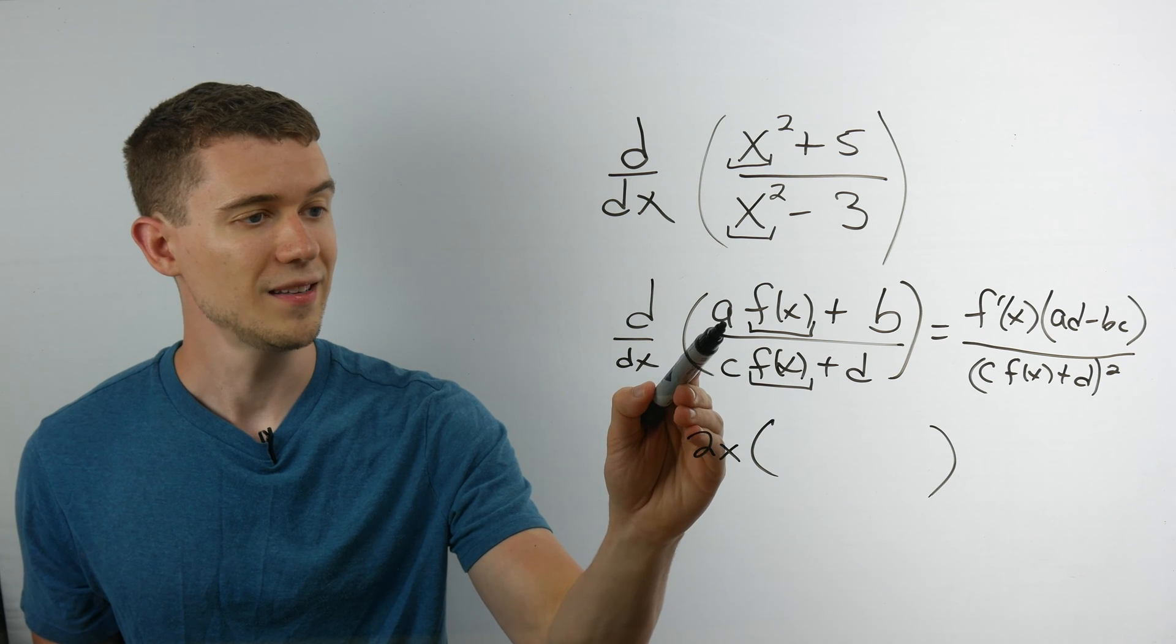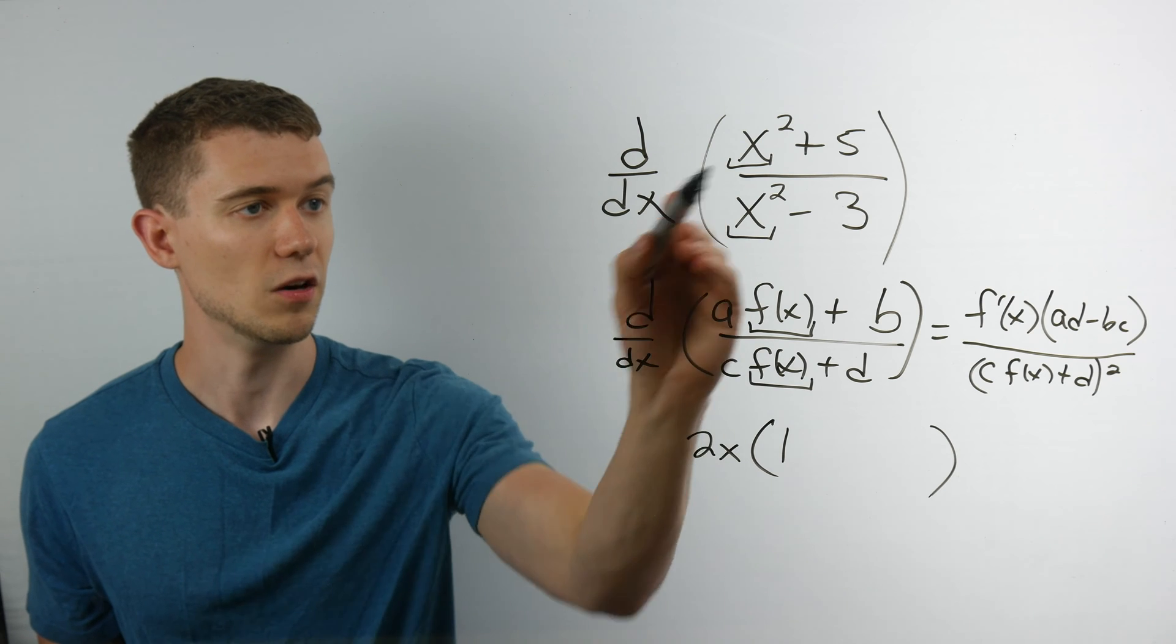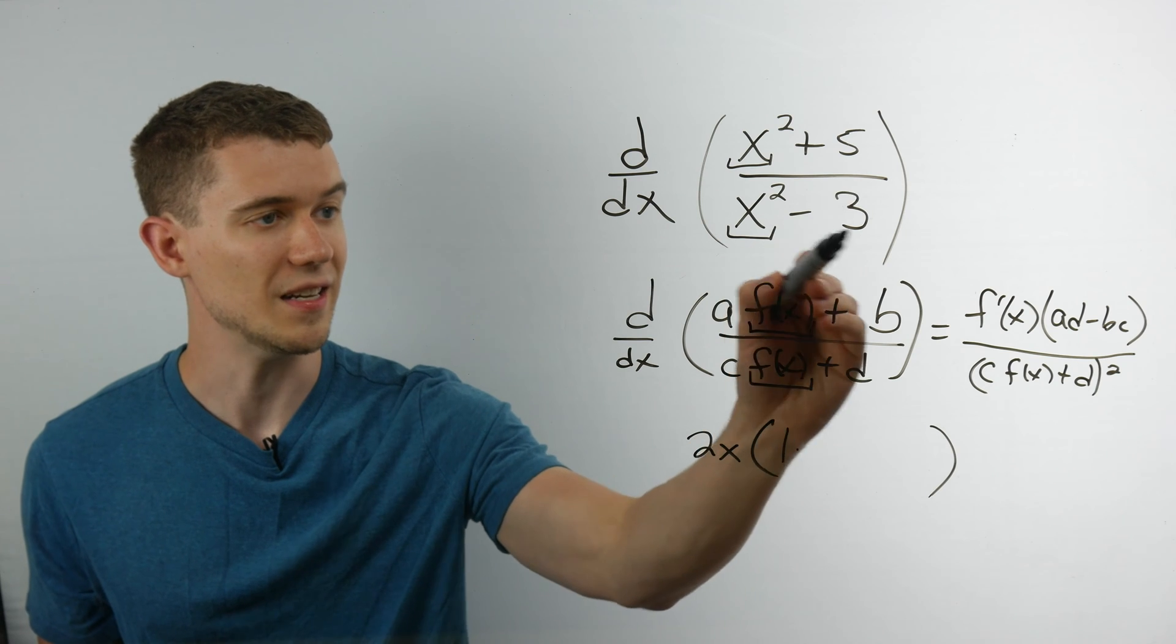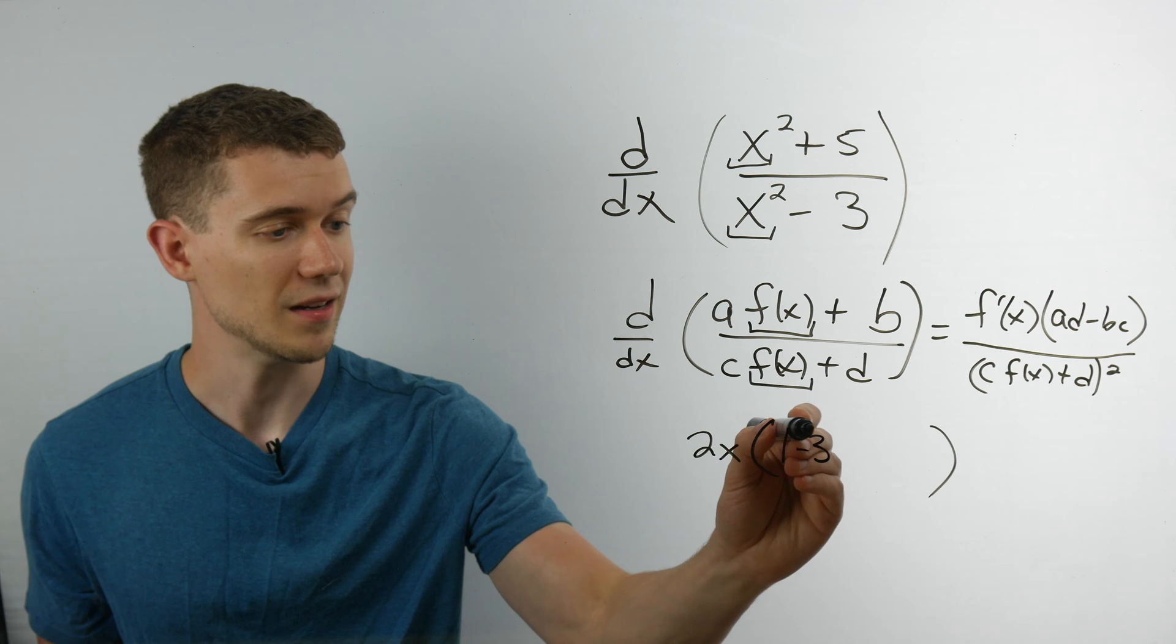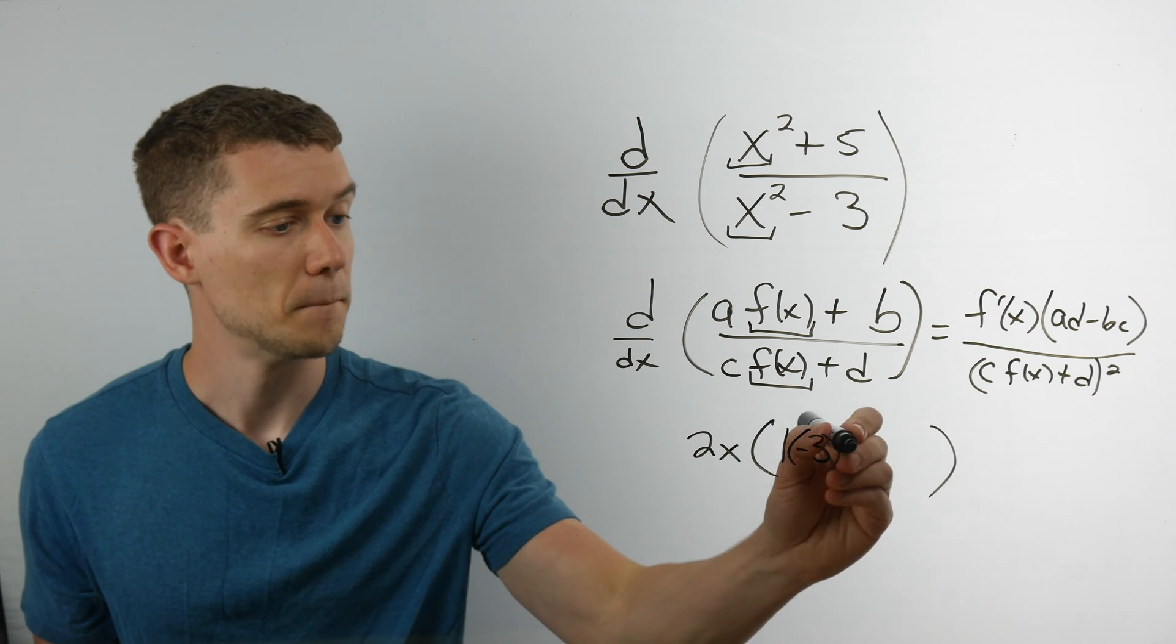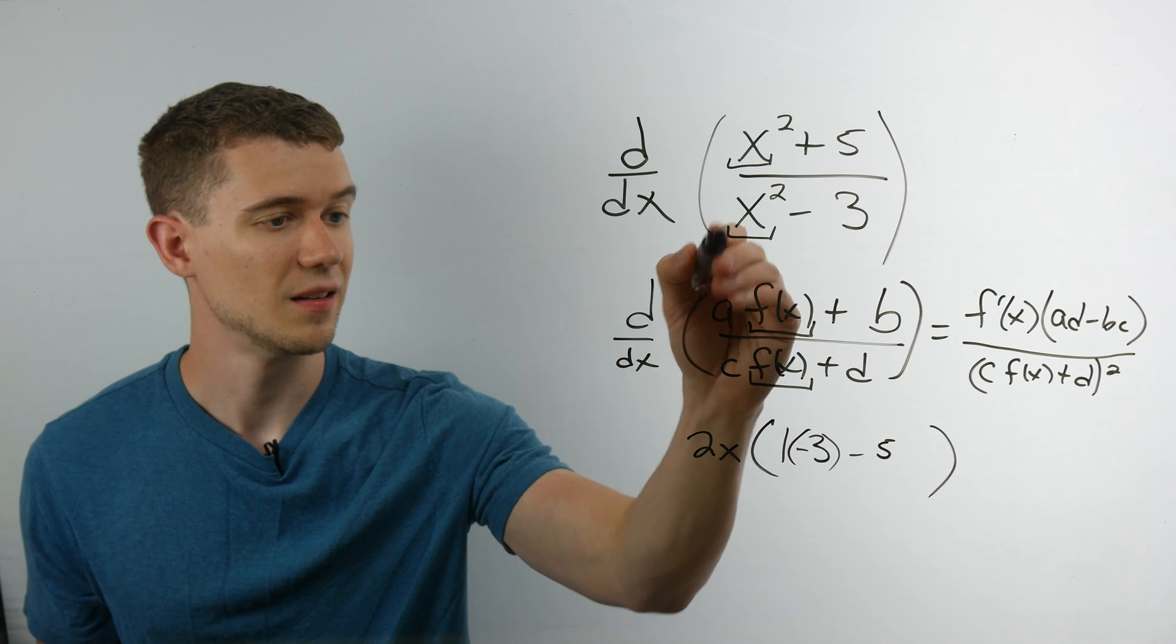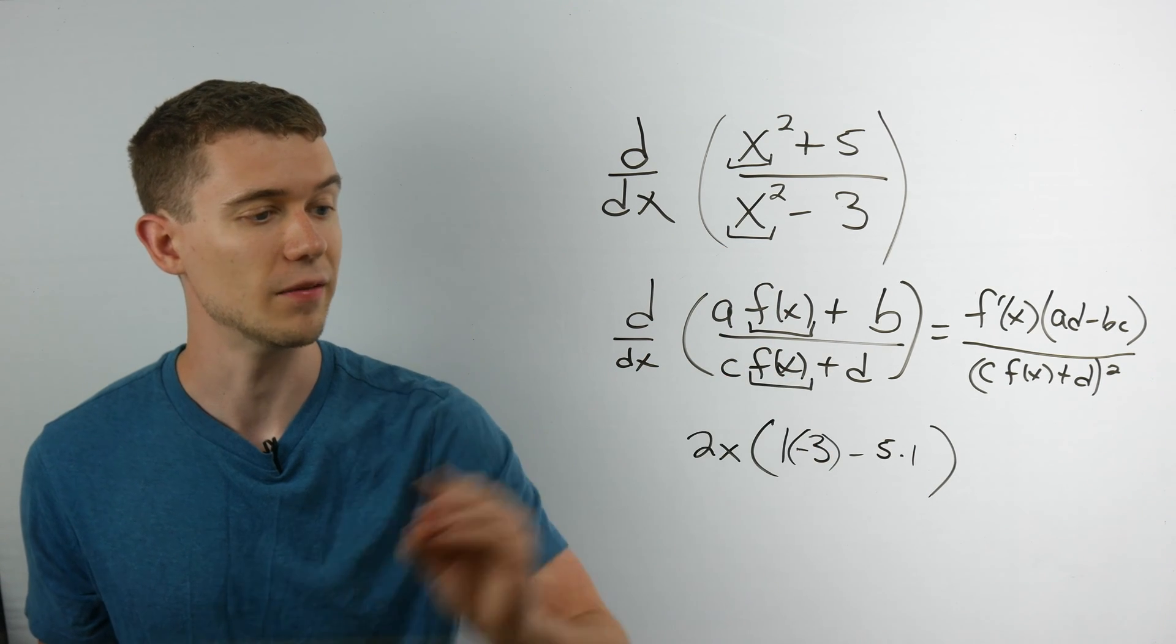So a is in front of this first f of x, so that's simply 1 in our case, times d. Well in this case our d is 3. In fact it's minus 3. You got to be careful with the negatives. Those also apply here. Minus b, which in this case is 5, times c. C in this case is 1, the coefficient of this f of x.